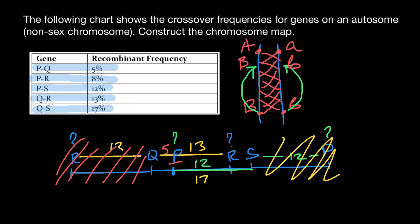The order of the genes is Q, P, R, S. Another possible variant would be if we flip the chromosome, giving S, R, P, Q — but no other variants are possible according to this table. Between genes Q and S, which represent the two ends of the chromosome, we have only 17 map units — well within the 50 map unit maximum required by theory. That's all for today. Thank you for your attention. Please subscribe for my new videos, which I post almost every day. See you in the next video. Goodbye.